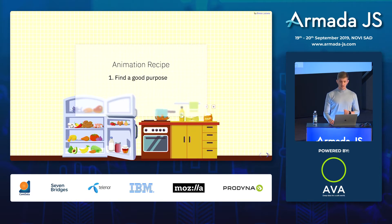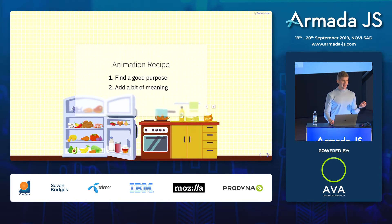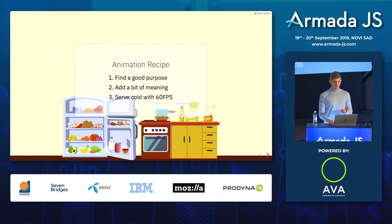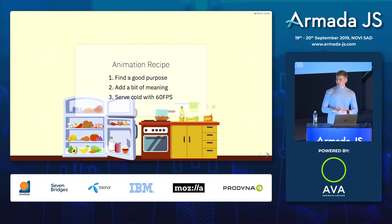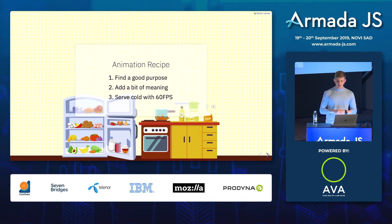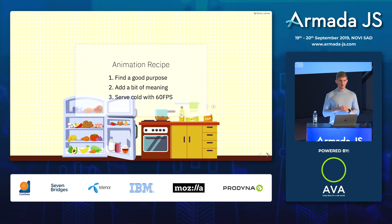Step one: find a good purpose. Step two: add a bit of meaning. Step three: serve cold with 60 FPS — and cold because you don't want your user's laptop to burn out while running your amazing 60 FPS animation. Make sure it's cool on an average laptop. That's an important thing — not on your i7, NVIDIA super speedy, super fast computer.